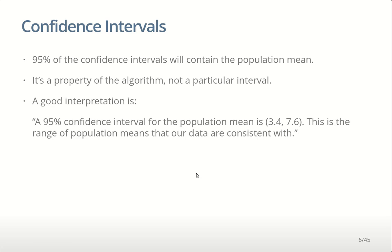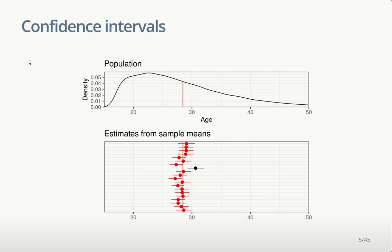That 95% is a property of the algorithm, not a particular interval. For one particular interval, either it does or it doesn't contain the population mean — it doesn't contain the population mean with probability 95% or anything like that. When we have just one sample we don't know whether we're the black one or one of the red ones, but we know there are more red ones than black ones, so over time as we do lots of confidence intervals we're more likely to be right than wrong.